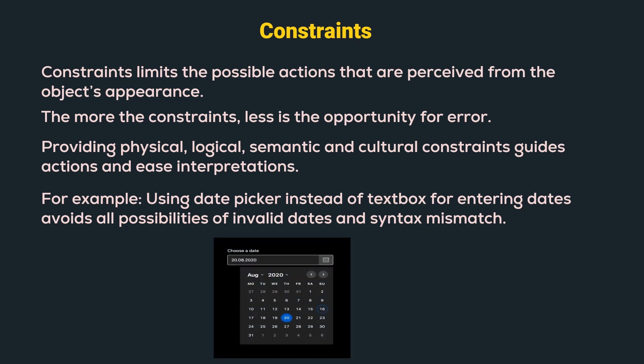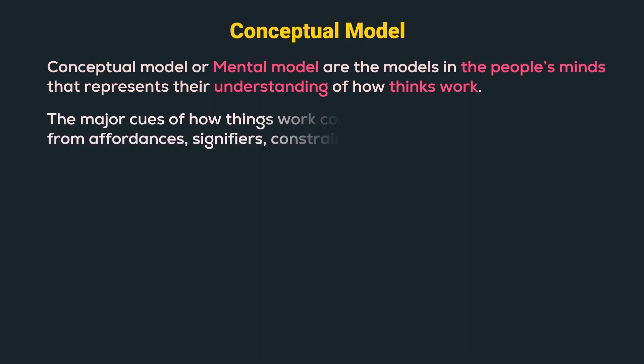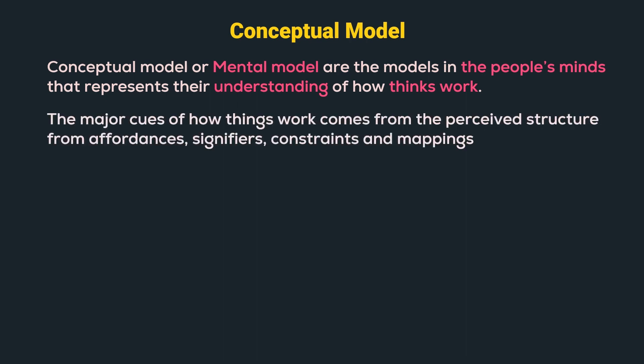Now let us understand the last principle, which is conceptual model. Conceptual models, or mental models, are the models in people's minds that represent their understanding of how things work. The major cues of how things work come from the perceived structure — from affordances, signifiers, constraints, and mappings.